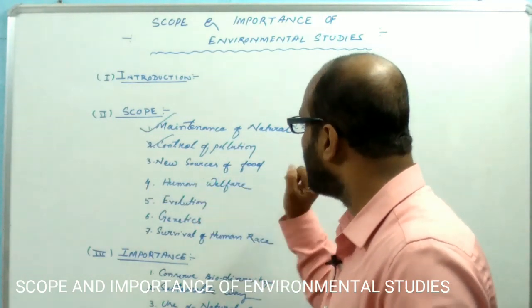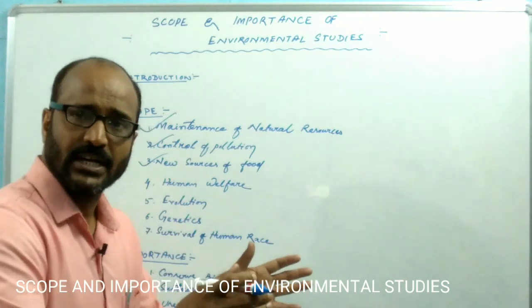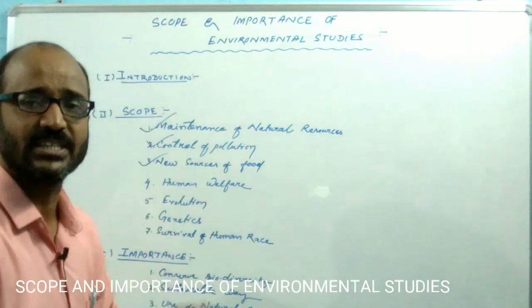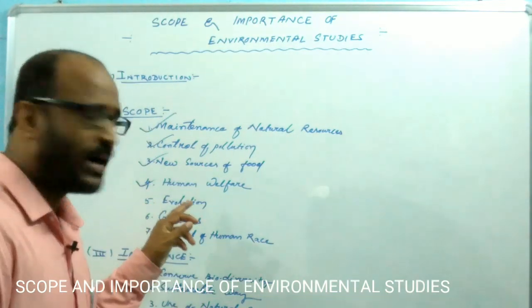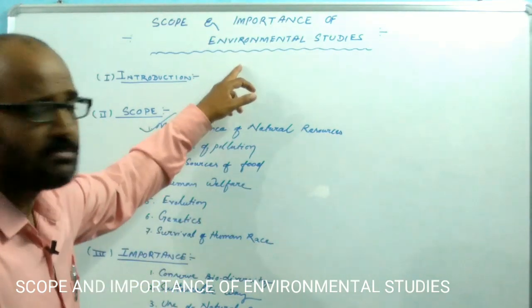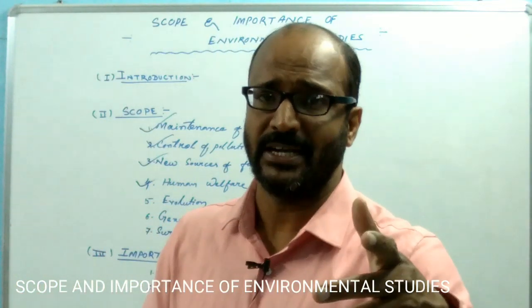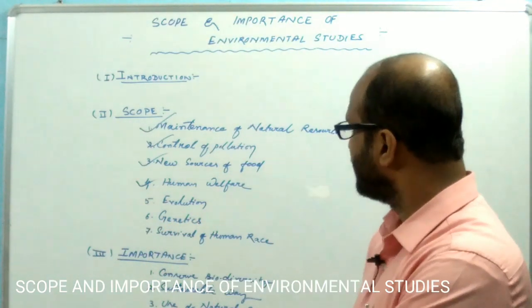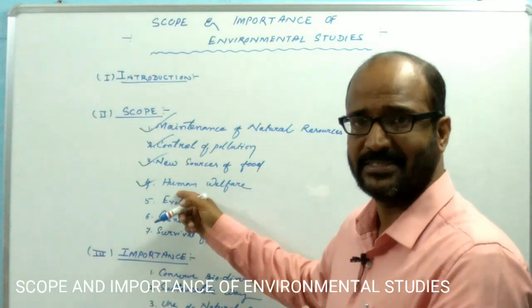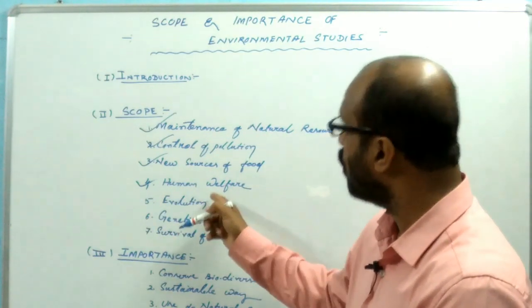The third scope is the discovery of new sources of food. The study of the environment opens new ways to discover new food sources for different organisms or for human beings. The fourth scope is human welfare. If you study the environment, you understand the composition of the environment and the relationship between the environment and human beings, which allows us to utilize knowledge for human welfare.